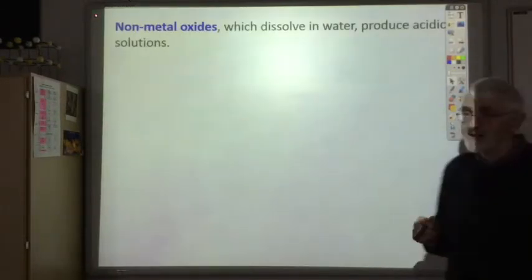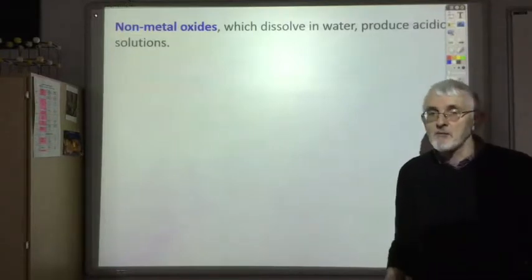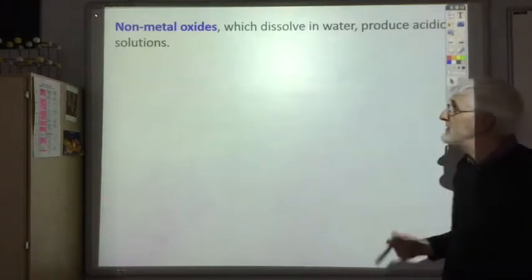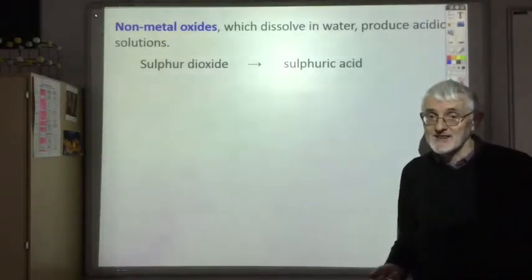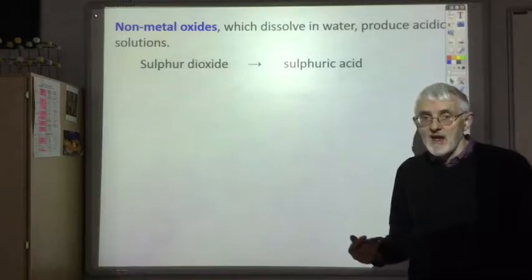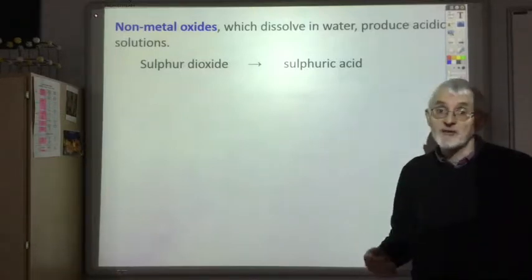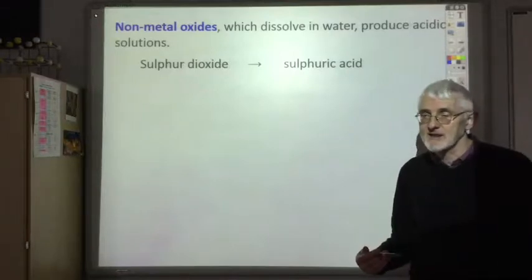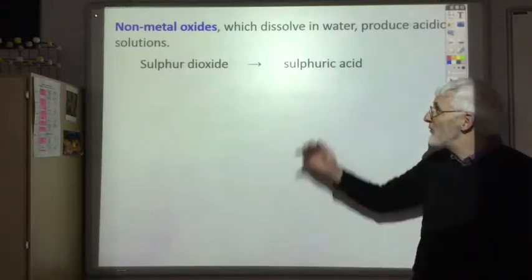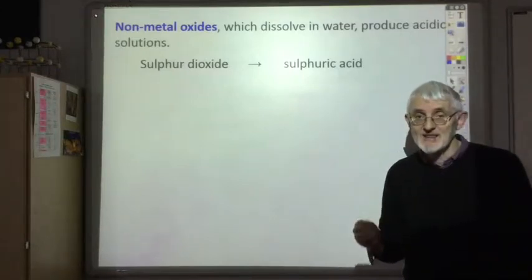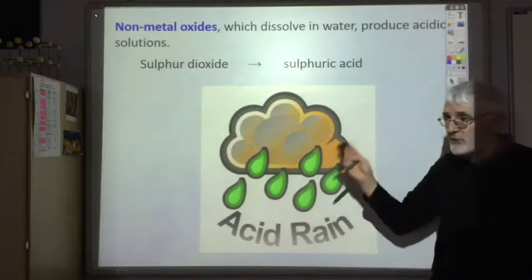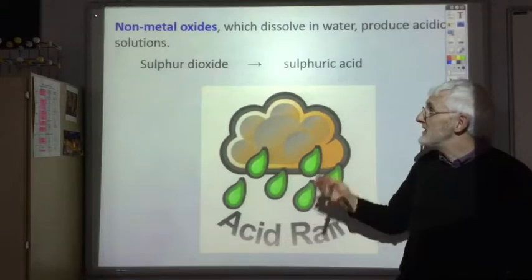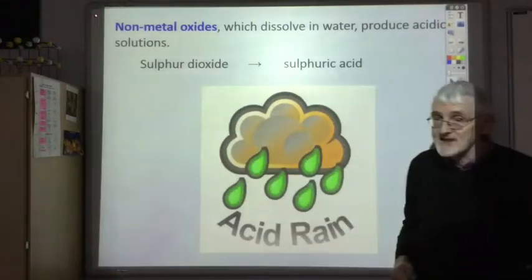It's really important to remember that non-metal oxides which dissolve in water will produce acidic solutions. For example, dissolving sulfur dioxide in water gives sulfuric acid, and dissolving nitrogen dioxide in water gives nitric acid. A useful memory aid: sulfur dioxide is the gas responsible for acid rain, so that association reminds you that non-metal oxides produce acidic solutions.